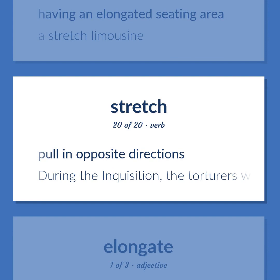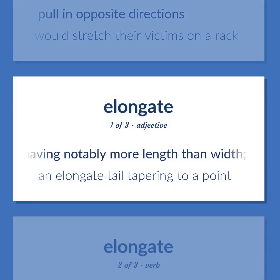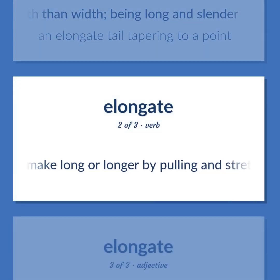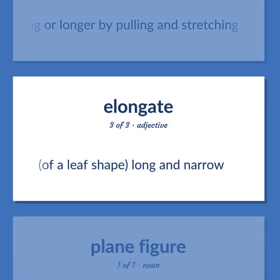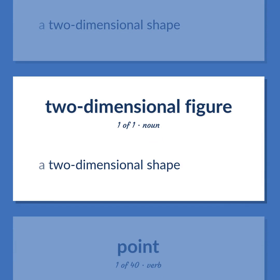Pull in opposite directions. During the inquisition, the torturers would stretch their victims on a rack. Having notably more length than width; being long and slender. An elongate tail tapering to a point. Make long or longer by pulling and stretching. Of a leaf shape, long and narrow. A two-dimensional shape.